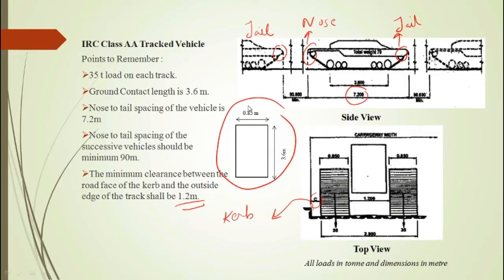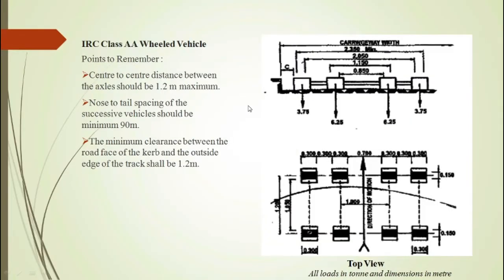Now moving on to the IRC Class AA wheeled vehicle — this is the typical front view and top view. The loads are 3.75 ton, 6.25 ton, 6.25 ton, and 3.75 ton; adding them and multiplying by 2 gives a total load of 40 ton. As per IRC, the center-to-center distance between the axles should be maximum 1.2 meter.